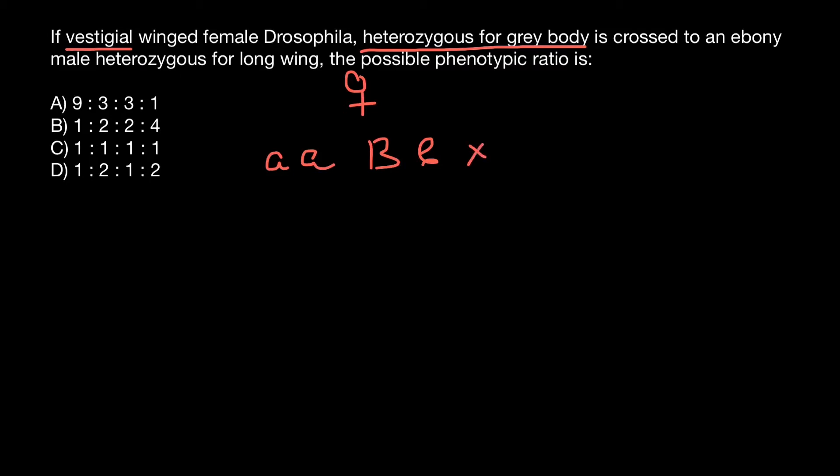And we cross with male. So this is the male side. And what do we know about the male? Male color is ebony. And could it be dominant, caused by dominant allele? No, because we know gray color is caused by dominant allele. So the genotype would be small b, small b for color. And we know that this male is heterozygous for long wing. And long wings are a normal size of the wings of the Drosophila male. So genotype would be capital A and small a.